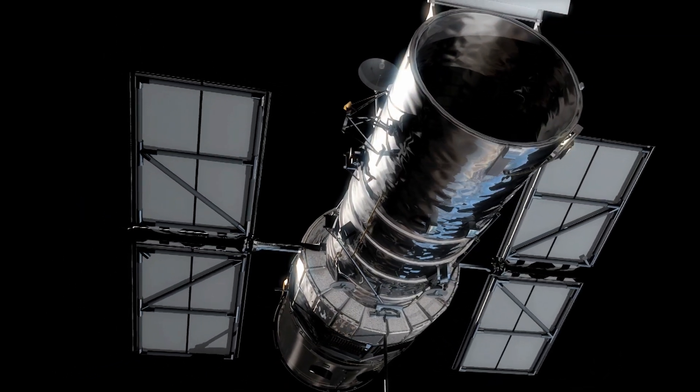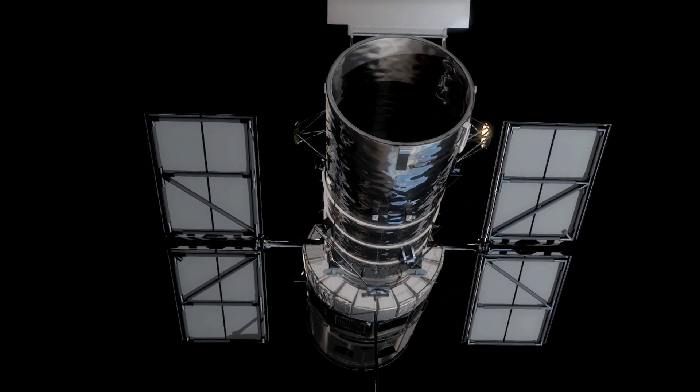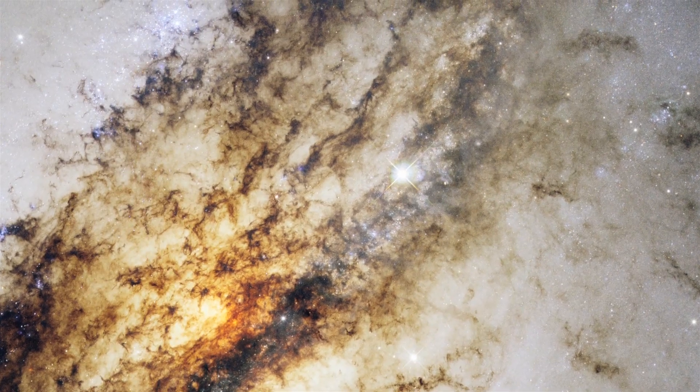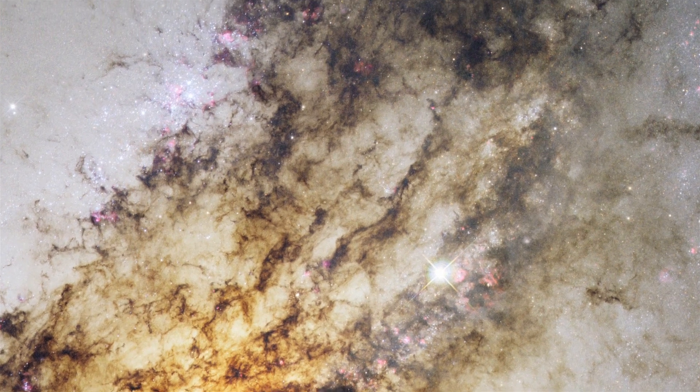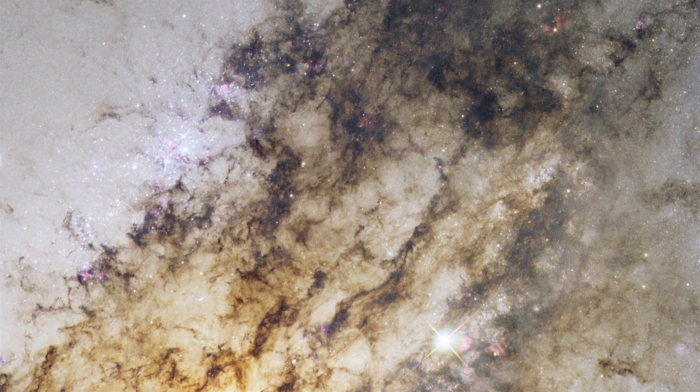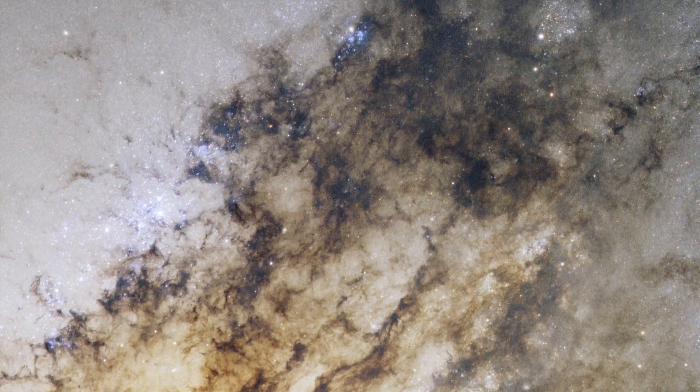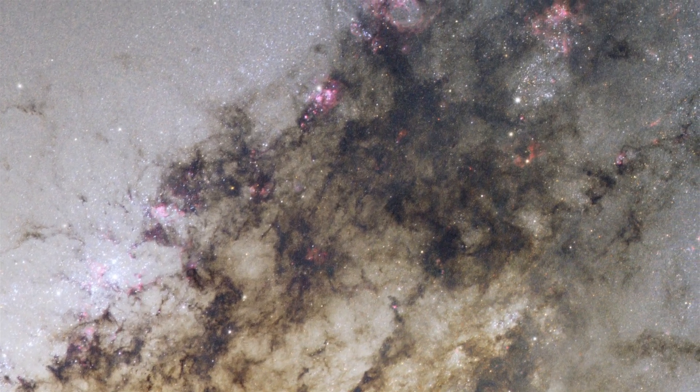But only Hubble reveals this much detail. Not only does the space telescope offer unprecedented clarity due to its position above the distorting effects of the atmosphere, it is also able to observe ultraviolet and infrared wavelengths with pristine clarity.